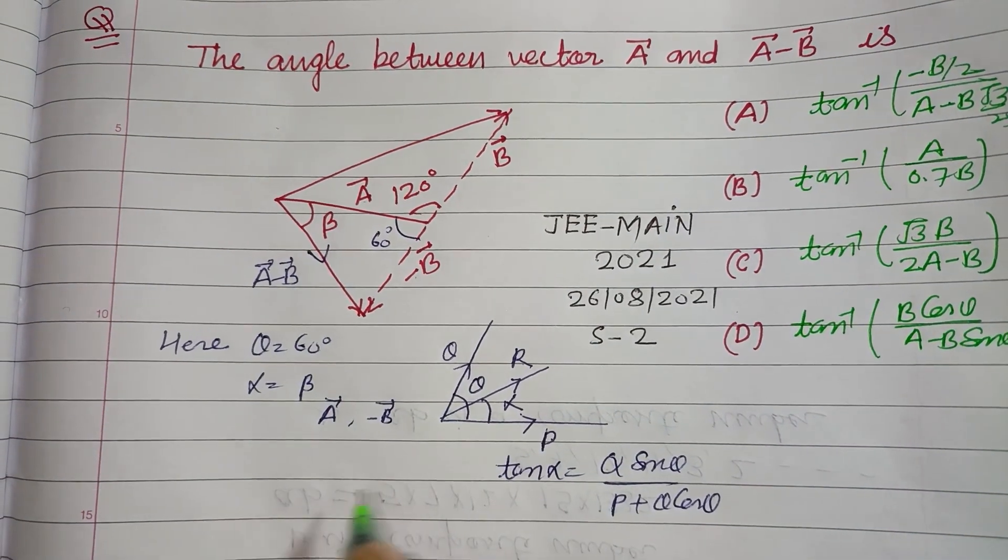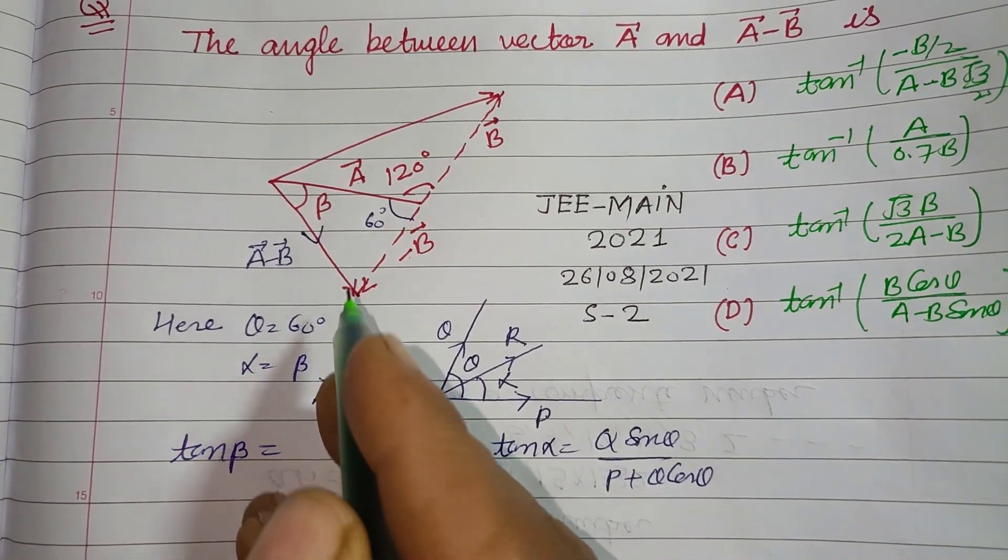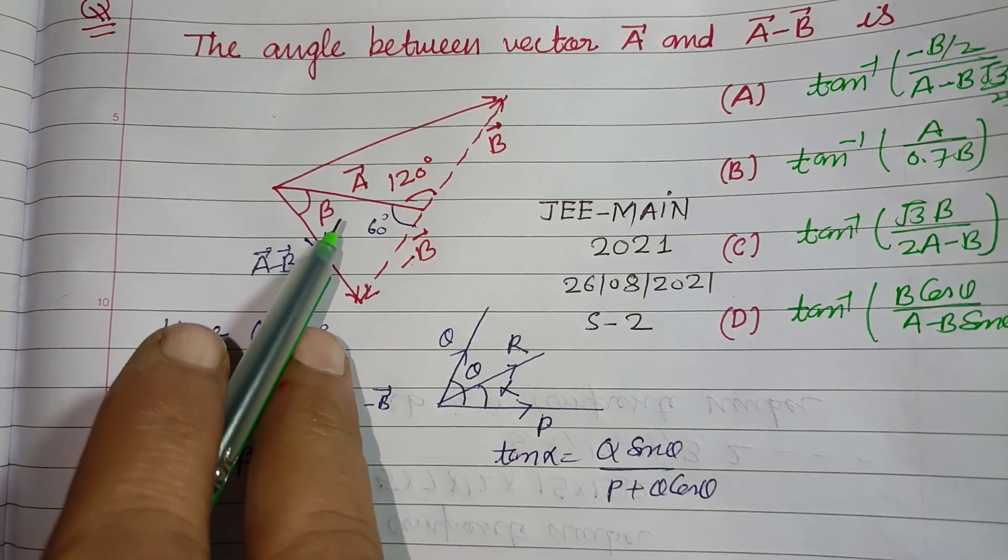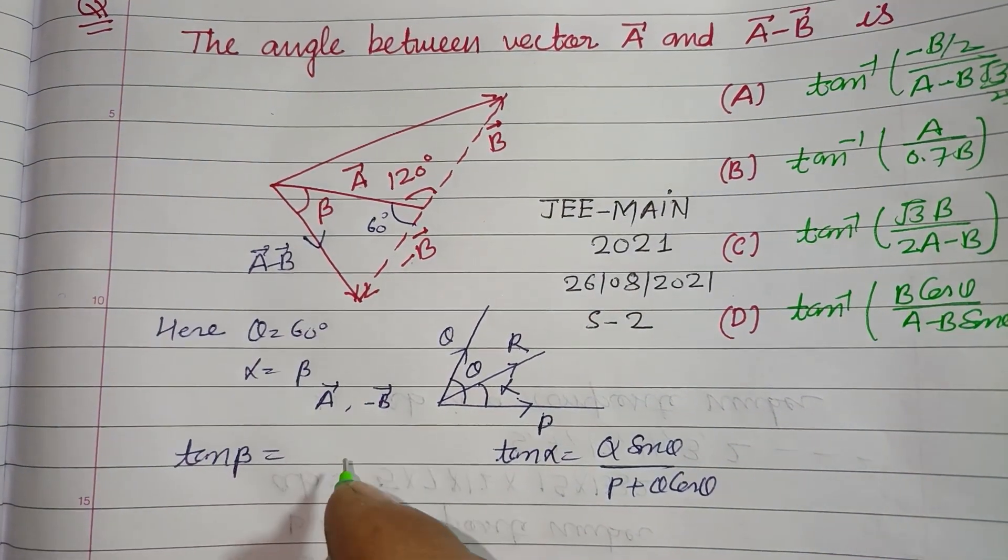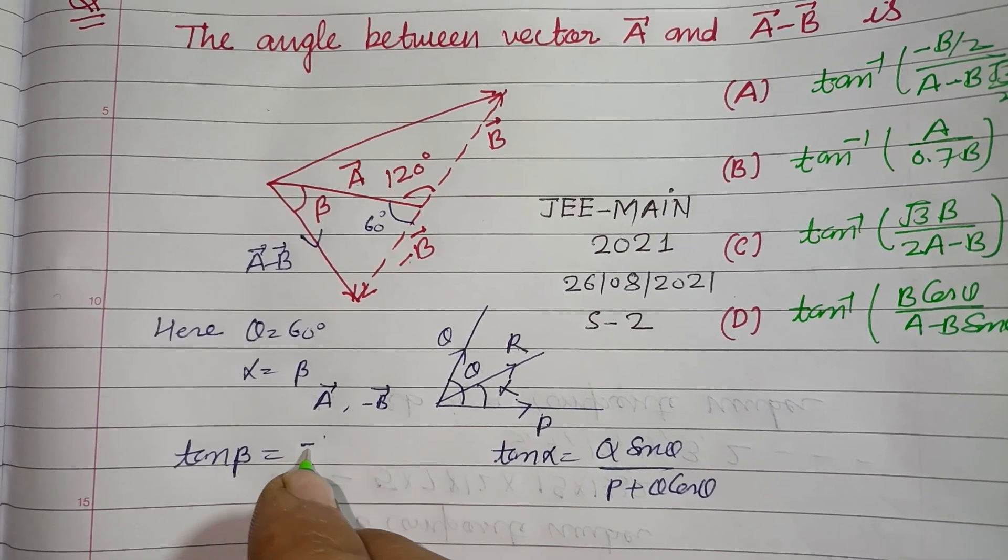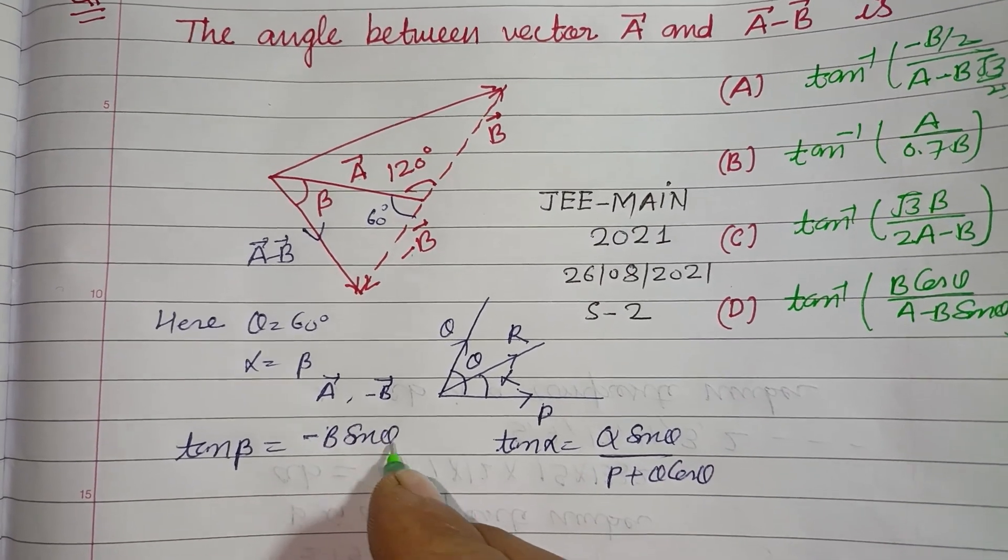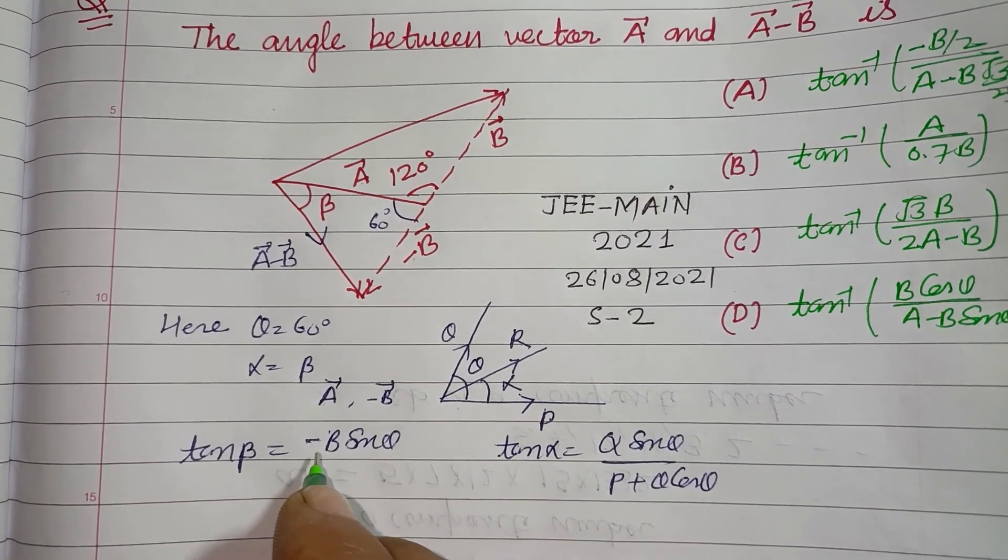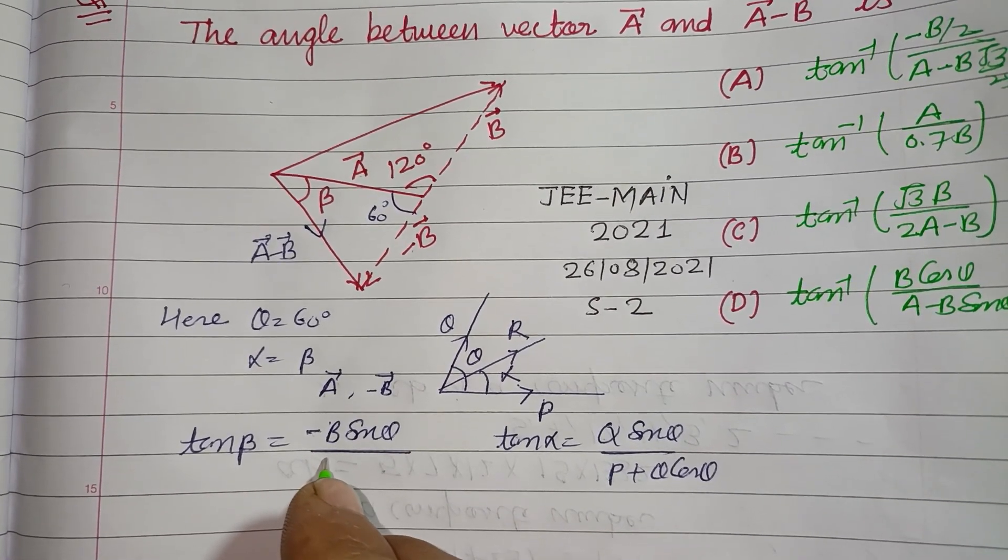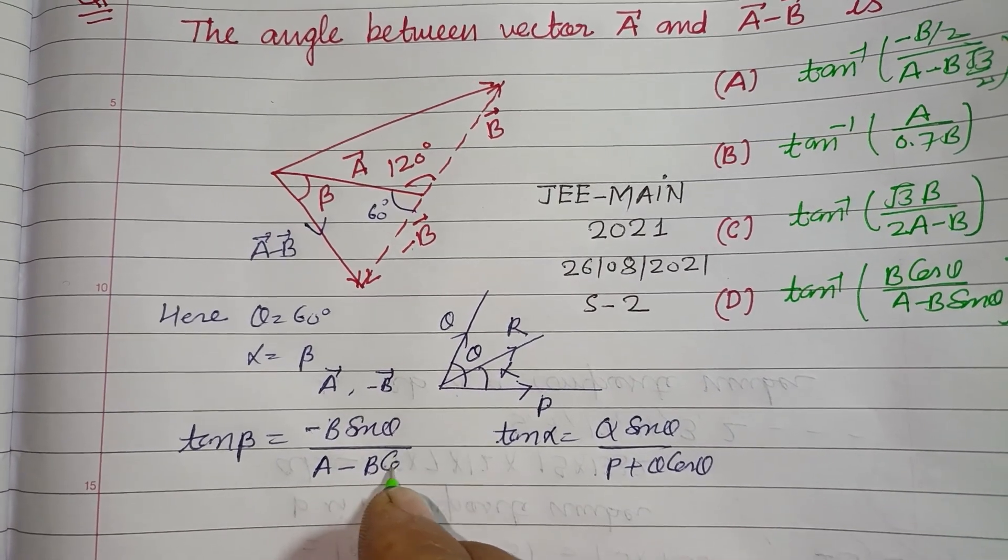So using this, tan beta is equal to Q is here, minus B, so minus B sin theta upon A minus B cos theta.